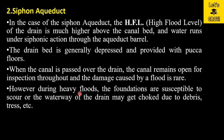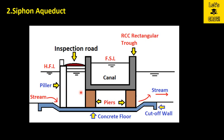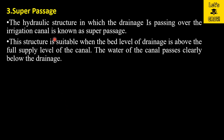However, during heavy floods the foundations are susceptible to scour, or the waterways of the drain may get choked due to debris, trees, etc. If a high flood passes through the siphon aqueduct, debris, small branches, or trees can choke the flow, which may damage the canal structure. The piers supporting the inspection road and the canal trough may be subjected to scouring. Although pucca concrete flooring is provided to prevent scouring, a high flood can damage the flooring as well.